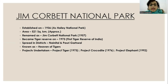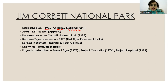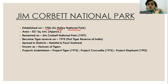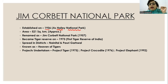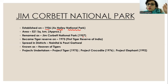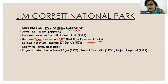The first national park of the state is Jim Corbett National Park. It was established in 1936 and was named Hailey National Park. The coverage area is 521 square kilometers — very, very important for exam purposes. It was renamed Jim Corbett National Park in the year 1957. It became a tiger reserve in 1973, making it the first tiger reserve of India, spread across Nainital and Pauri Garhwal. It is also known as the heaven of tigers.